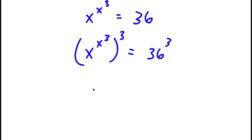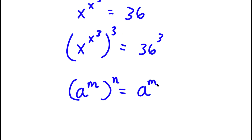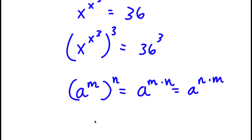If I have something in the form a to the power of m to the power of n, this is equal to a to the power of m times n. And m and n are interchangeable, meaning I can also write this as a to the power of n times m. And that means I can write a to the power of n times m as a to the power of n to the power of m.